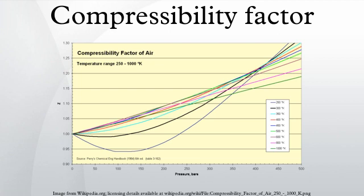For a gas that is a mixture of two or more pure gases, the gas composition must be known before compressibility can be calculated. Alternatively, the compressibility factor for specific gases can be read from generalized compressibility charts that plot Z as a function of pressure at constant temperature.